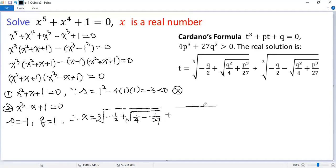Plus the second cubic root of negative q over 2, negative 1 over 2, minus the same square root from the first one. So we get square root of 1 over 4 minus 1 over 27.